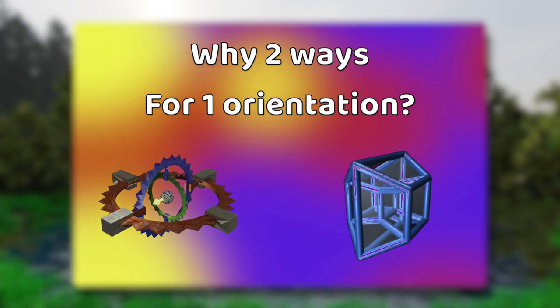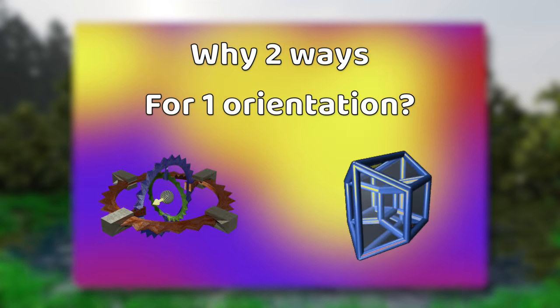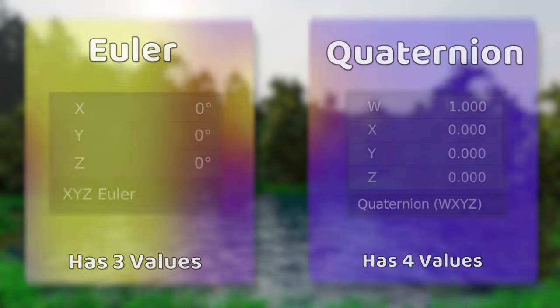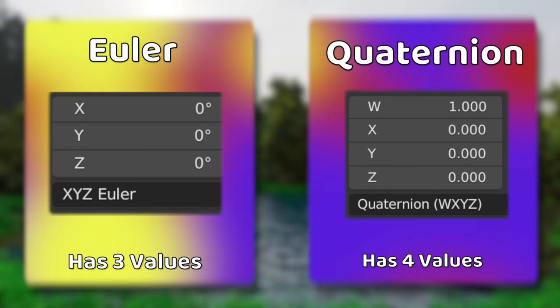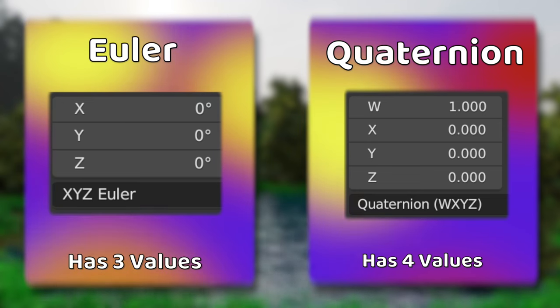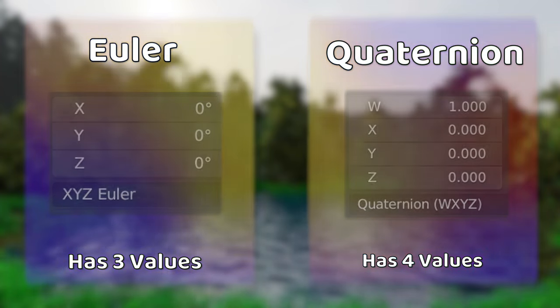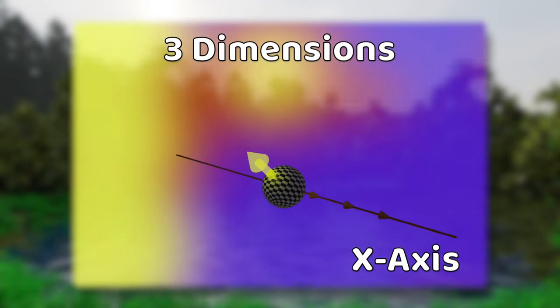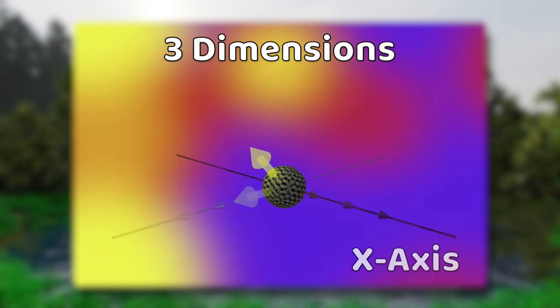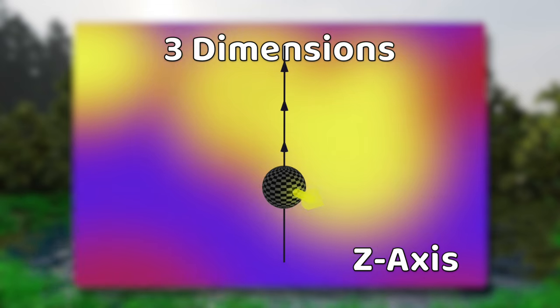So why do we have two ways to represent the same thing? Well, they both have their own benefits and consequences. The most obvious difference is that Quaternion has four values and Euler only has three. That's because Quaternion represents four dimensions and Euler only has three. Euler values are usually a lot easier to think about — after all, we see the world in three dimensions, so adjusting something along X, Y, or Z can be easy to understand.